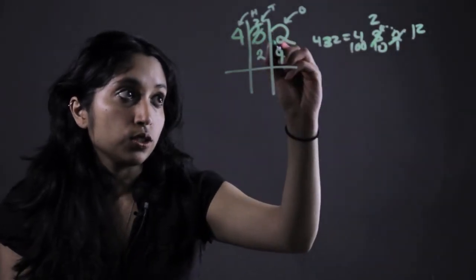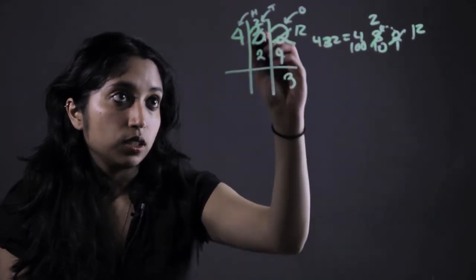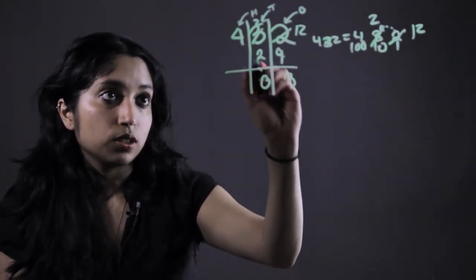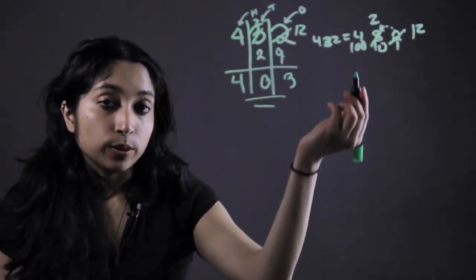Carry that over, so let's do this, 2, 12. So 12 minus 9 is 3. 2 minus 2 is 0. 4 minus 0 is 4. That's how we have our answer.